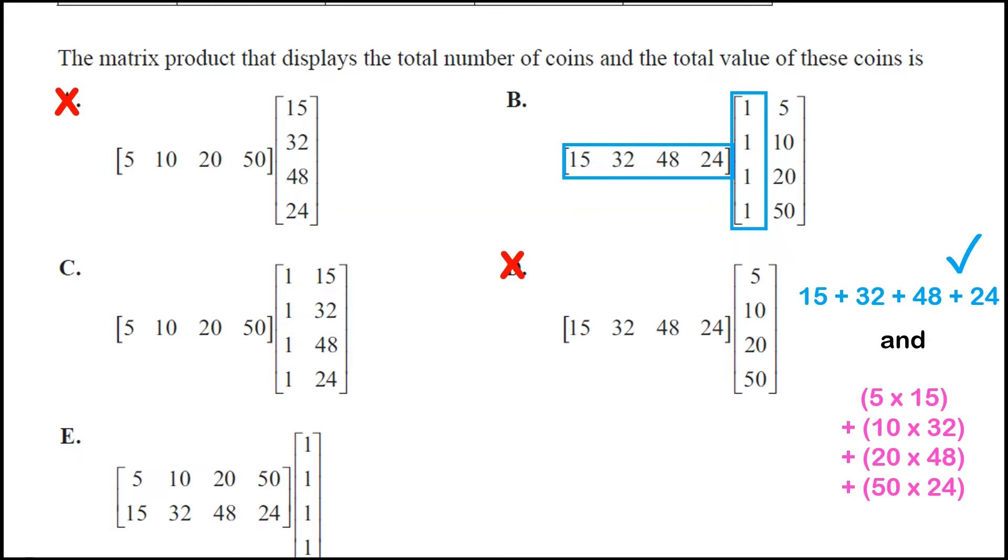And if we look at our first row second column, that's actually going to give us that second product that we need, which is the total value of the coins. So we're all good with B, we could check C and E to rule them out. But that's how we interpret that matrix multiplication.